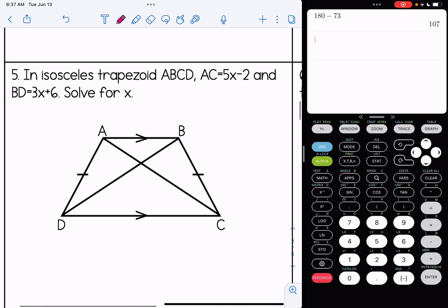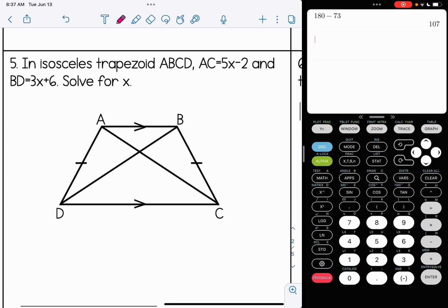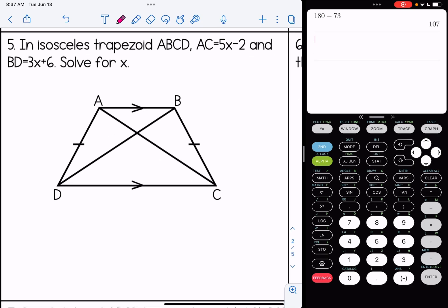Alright, number five. In an isosceles trapezoid ABCD, AC is 5x minus 2, BD is 3x plus 6. And we're going to solve for x. Well, we talked before. In an isosceles trapezoid, the diagonals are congruent to one another. So I'm going to set these equal to solve.